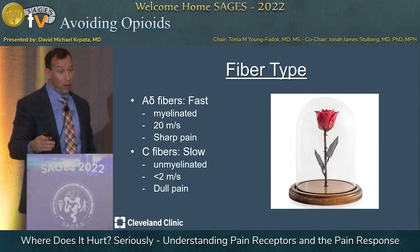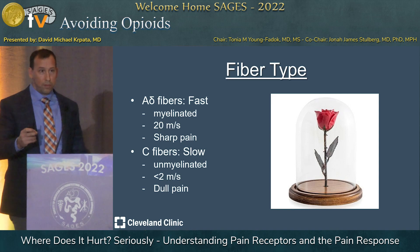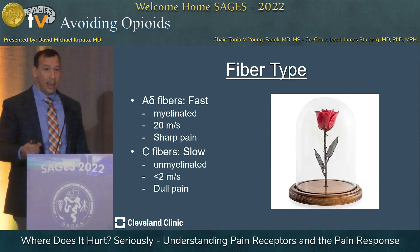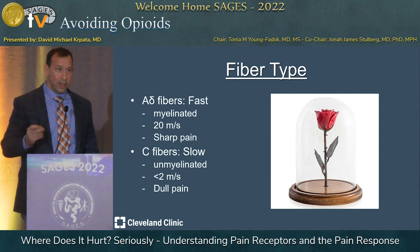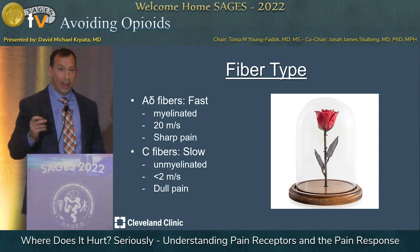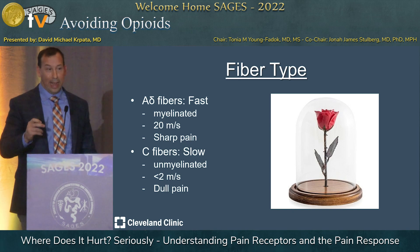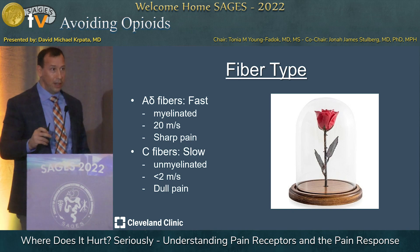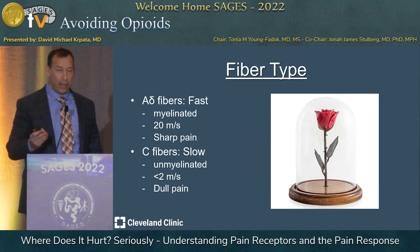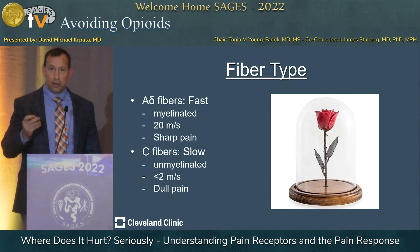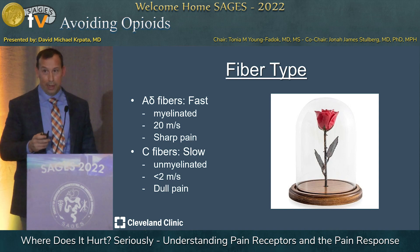Next time you go to pick out a rose for your loved one and you prick yourself with a thorn, that initial sharp pain is the alpha-delta fiber sending the signal back to tell you to get your finger off the thorn. And then when you look at your finger and you still feel the throbbing — that is the C fiber.